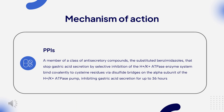Mechanism of Action: Esomeprazole exerts its stomach acid-suppressing effects by preventing the final step in gastric acid production by covalently binding to sulfhydryl groups of cysteines found on the H+/K+ ATPase enzyme at the secretory surface of gastric parietal cells. This results in inhibition of both basal and stimulated gastric acid secretion irrespective of the stimulus. As the binding of esomeprazole to the H+/K+ ATPase enzyme is irreversible and new enzyme needs to be expressed in order to resume acid secretion, esomeprazole's duration of antisecretory effect persists longer than 24 hours.